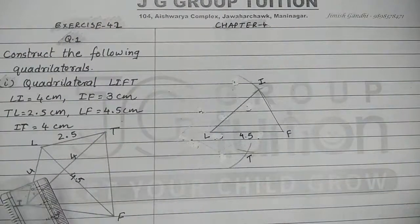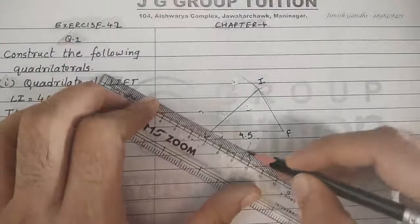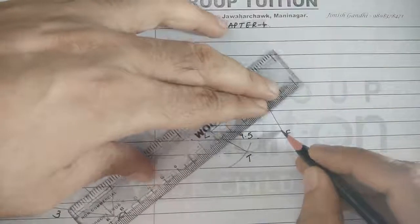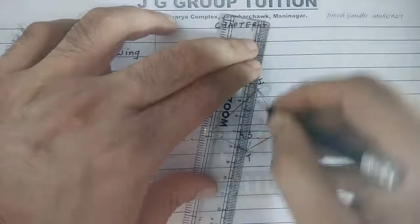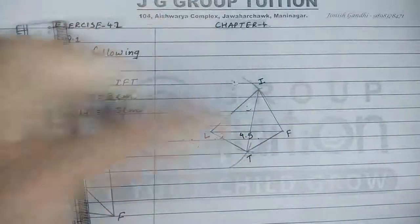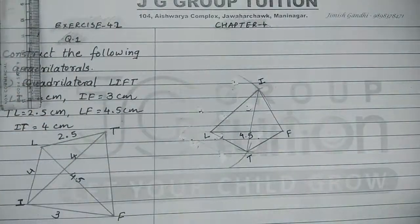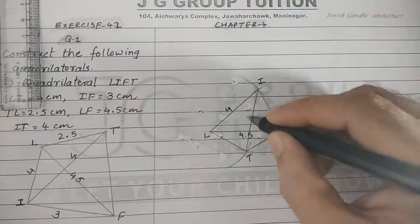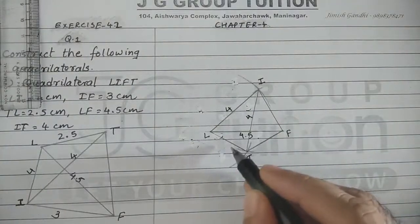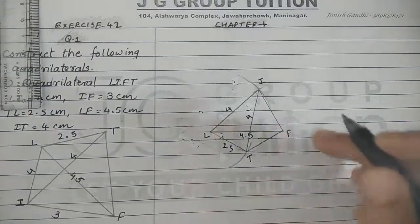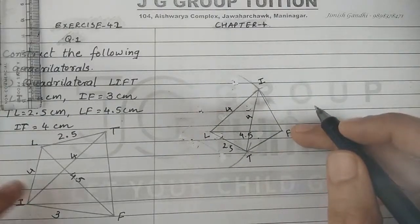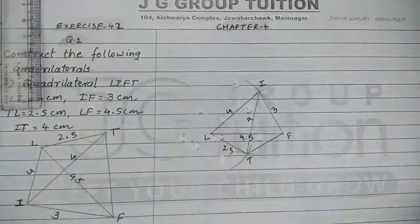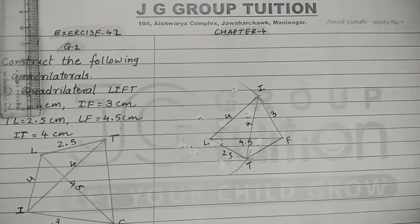Let us join point L with T, F with T, and I with T. So this is the required quadrilateral LIFT. Let us note down all the lengths: this is 4, this is 4, this is 2.5, and FI is of 3. So the required quadrilateral LIFT is obtained.